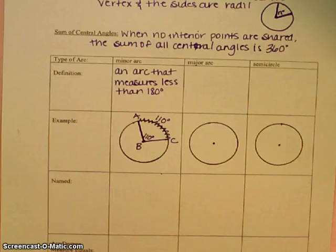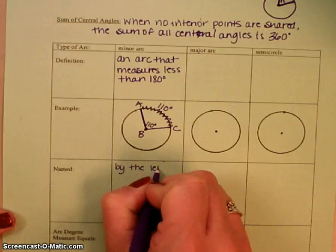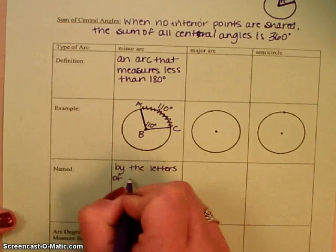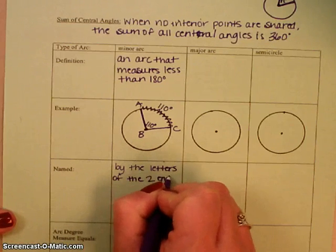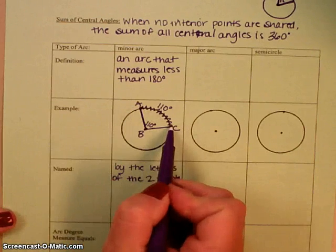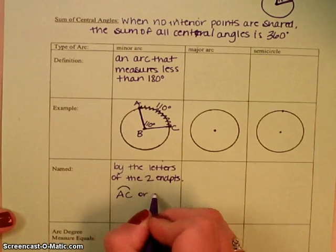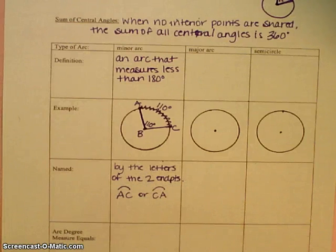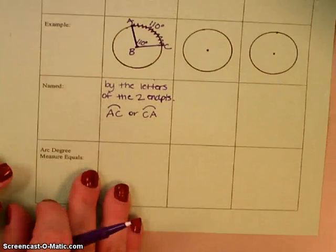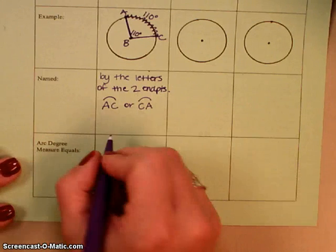Now when we name an arc, it's going to be named by the letters of the two endpoints. So in this one, we have an end of that arc right here and the other end of that arc is right there. So we would say that this is arc AC, and then we put a little arc over it. Or you could say CA. The order doesn't necessarily matter with arcs. Then you put a little arc over it, just like we did with segments. We put a little segment over the top of it.